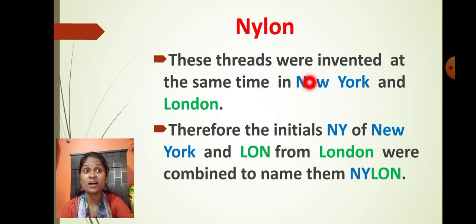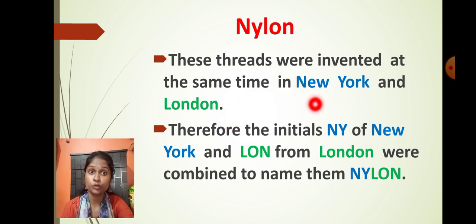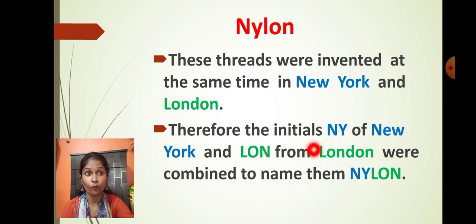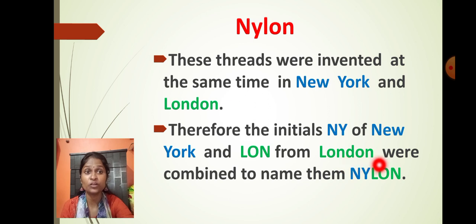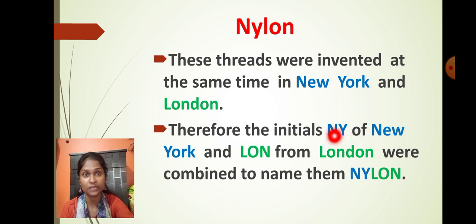Nylon was invented at the same time in New York and London. So these two places simultaneously invented this type of fiber. Therefore, the initials of New York are NY, and the initials of London are LON. By combining these two initials — NY from New York and LON from London — the word became NYLON. That is how the name nylon came into existence.